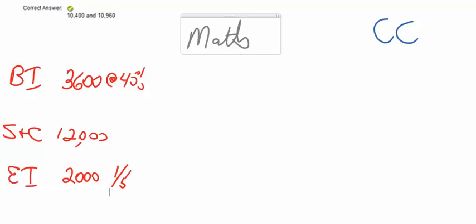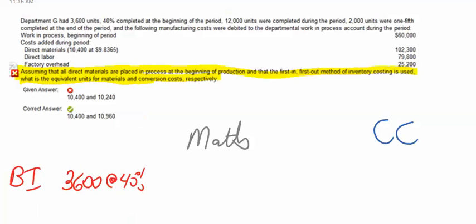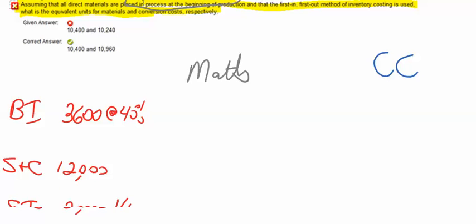Let's just concentrate on our materials at this point. Materials were added all at the beginning of the process, so we get 100%. Of the 3,600, those were added last month, so with regard to materials this month, we're going to have zero.